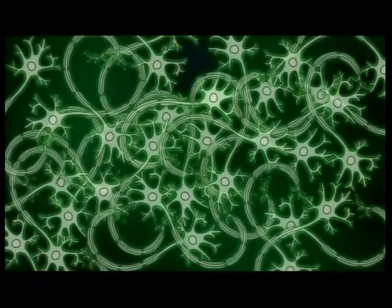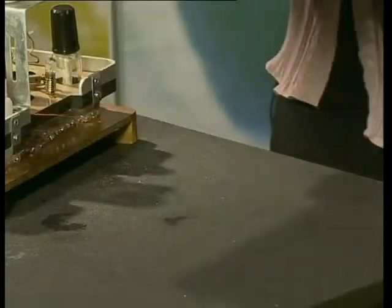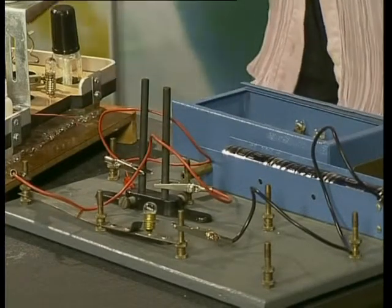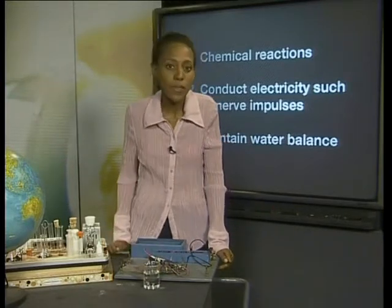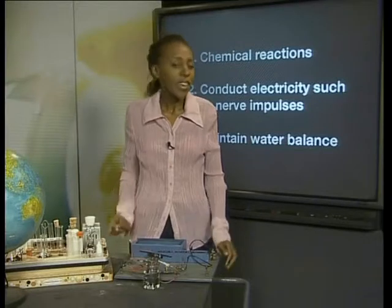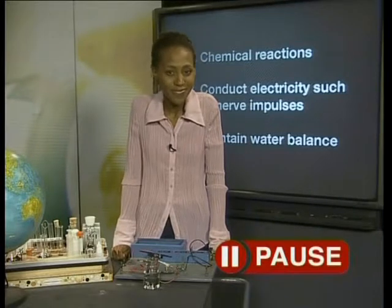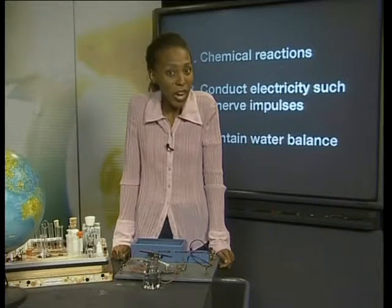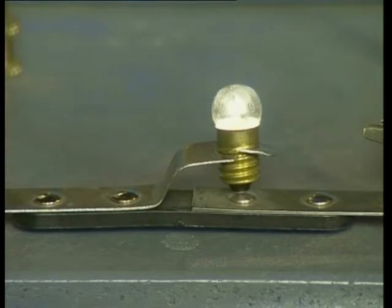In the bodies of living organisms, the ions that conduct electricity during nerve impulses are sodium, chloride, potassium, calcium and magnesium. I am setting up an experiment here to demonstrate how electricity is conducted in an ionic salt solution. In this beaker, we have sodium chloride dissolved in water. I am placing 2 graphite rods into it. If there is a current in the circuit, the light bulb should glow. The light bulb glows — so a current must be passing through the water.